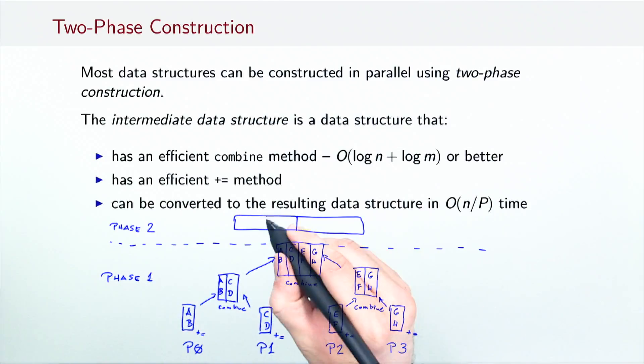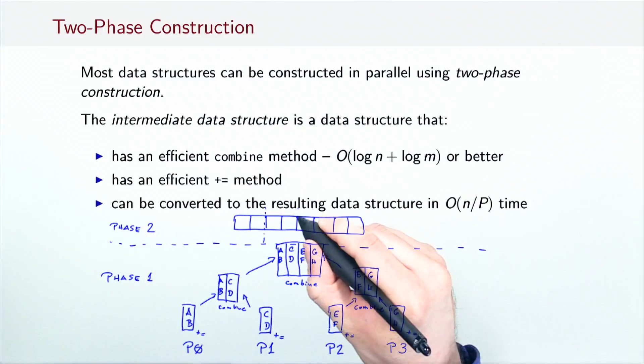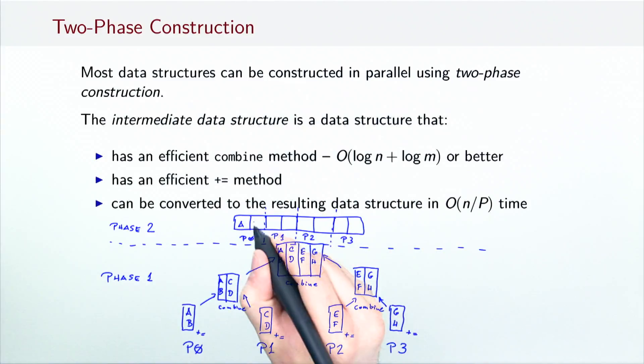In the second phase, the result method uses the intermediate data structure to create the final data structure in parallel. In our illustration, the final result is some array-like data structure whose subintervals are populated in parallel by different processors.